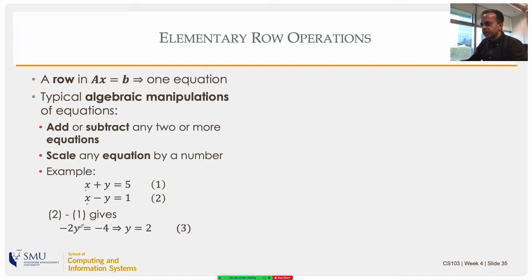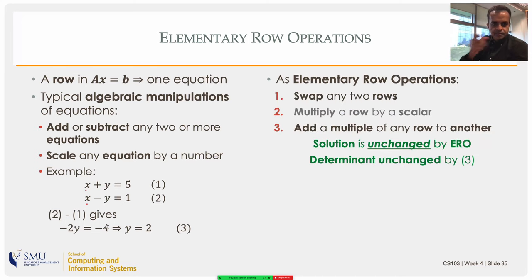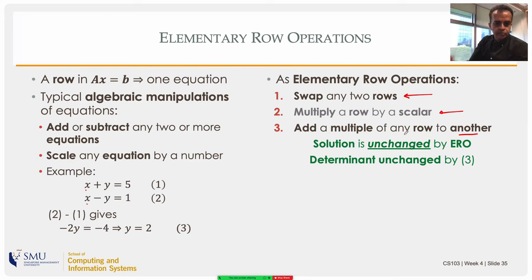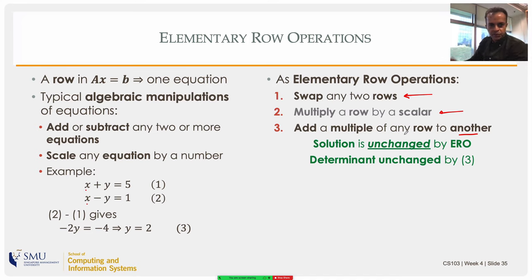The elementary row operations correspond to algebraic manipulations of equations. You can swap any two rows, multiply a row by a scalar, or add a multiple of a row to another row. Be careful: adding a multiple of a row to the same row is just scaling, and multiplying a row by zero gives zero equals zero — you lose information. Don't do those degenerate cases.